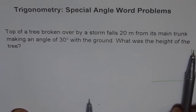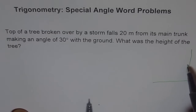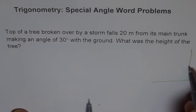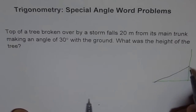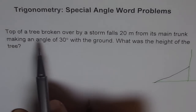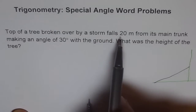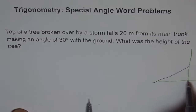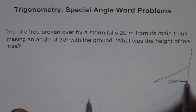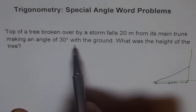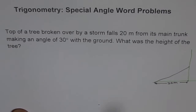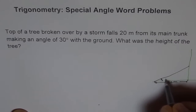This is the ground and this is a tree. The top of the tree broke somewhere from between and then fell down. This branch just broke and fell down. It broke over by a storm and falls 20 meters from its main trunk — so that distance from here to here is 20 meters. Making an angle of 30 degrees with the ground, so this angle here is 30 degrees.